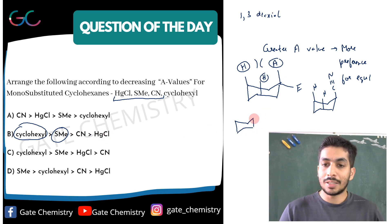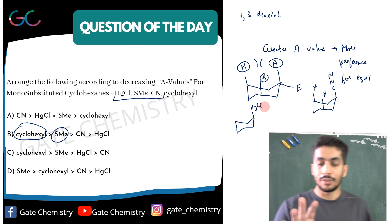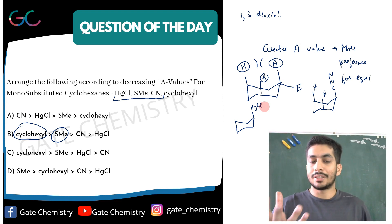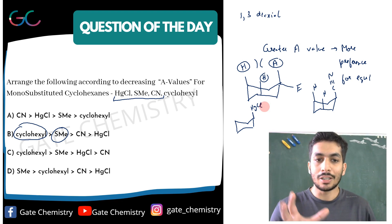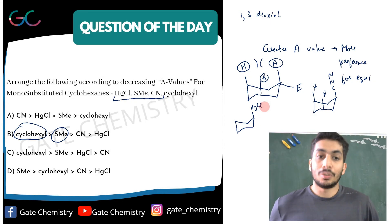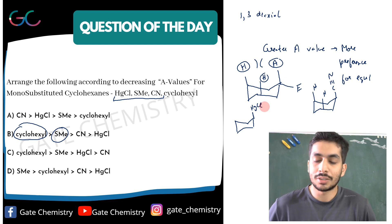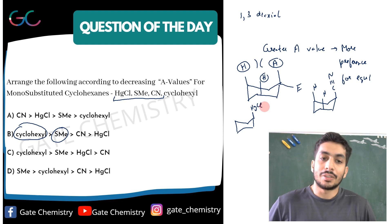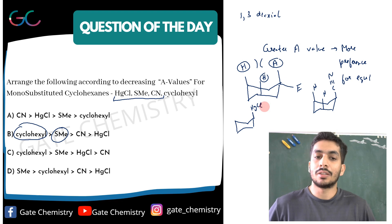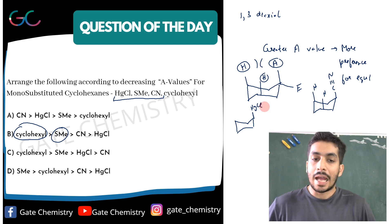Surprisingly, HgCl has a negative A-value. A negative A-value means that the HgCl substituent actually prefers the axial position over the equatorial position. That is very surprising because HgCl is not an especially small group — so why does it prefer axial? It turns out it's not just about steric hindrance; there are some attractive forces also playing a role.